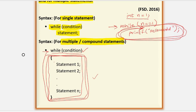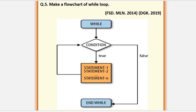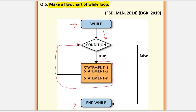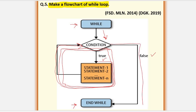While loop is used when we don't know how many times the loop will execute. Make a flowchart of while loop: Start and end use oval shapes, the condition uses a diamond shape, and statements use rectangles. After starting, the condition is tested — if true, the statements execute and the condition is tested again for the next iteration. This process continues until the condition is false, at which point the loop terminates.